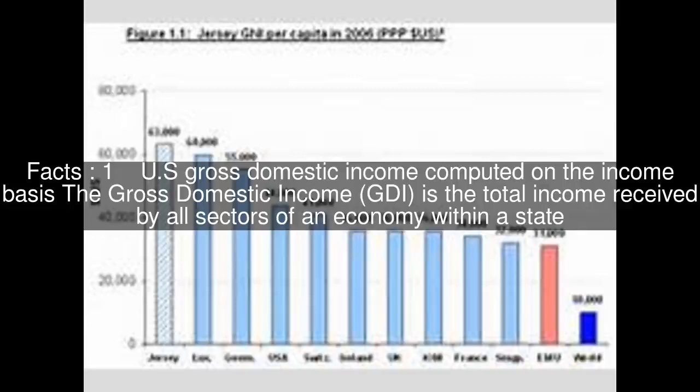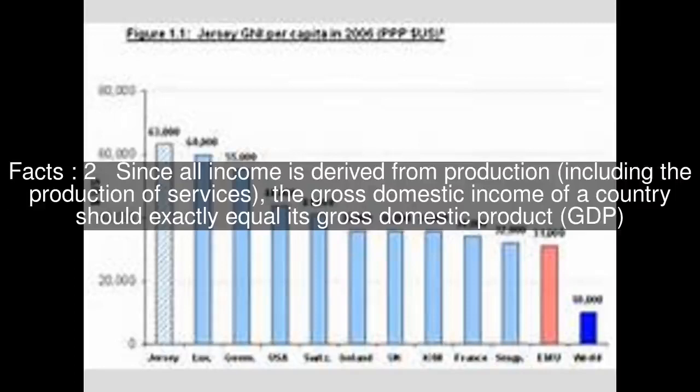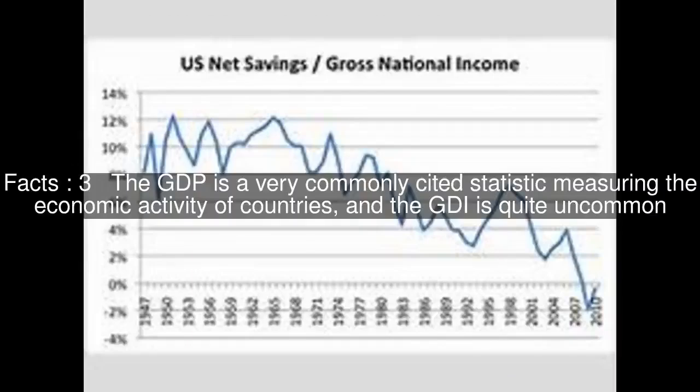Gross Domestic Income, computed on the income basis, is the total income received by all sectors of an economy within a state. Since all income is derived from production, including the production of services, the Gross Domestic Income of a country should exactly equal its Gross Domestic Product. The GDP is a very commonly cited statistic measuring the economic activity of countries, and the GDI is quite uncommon.